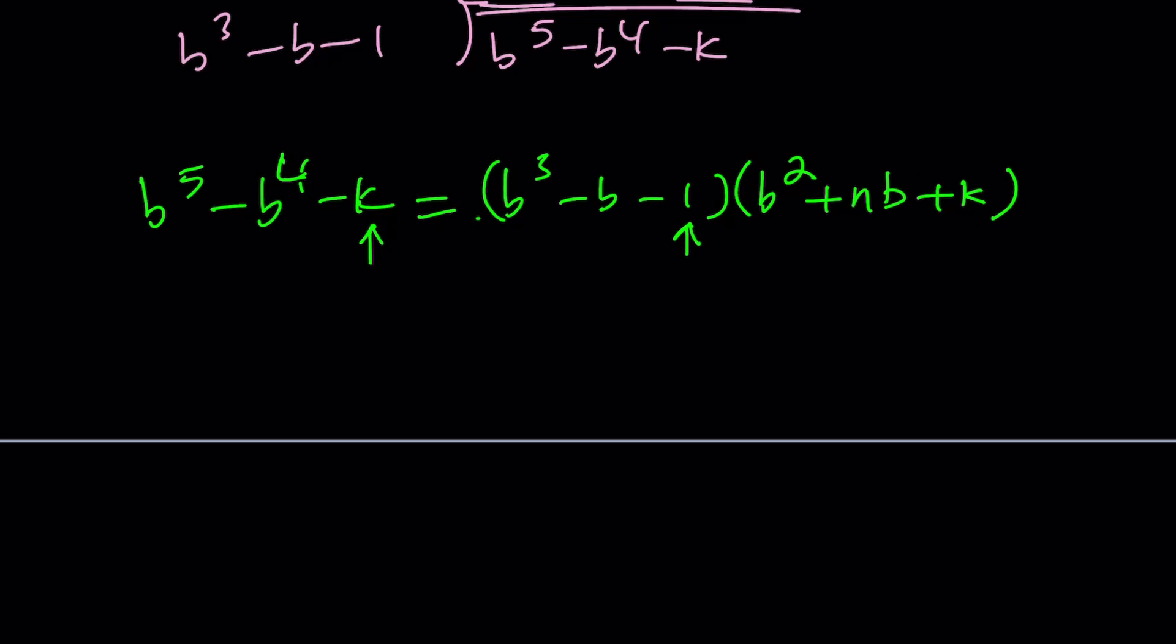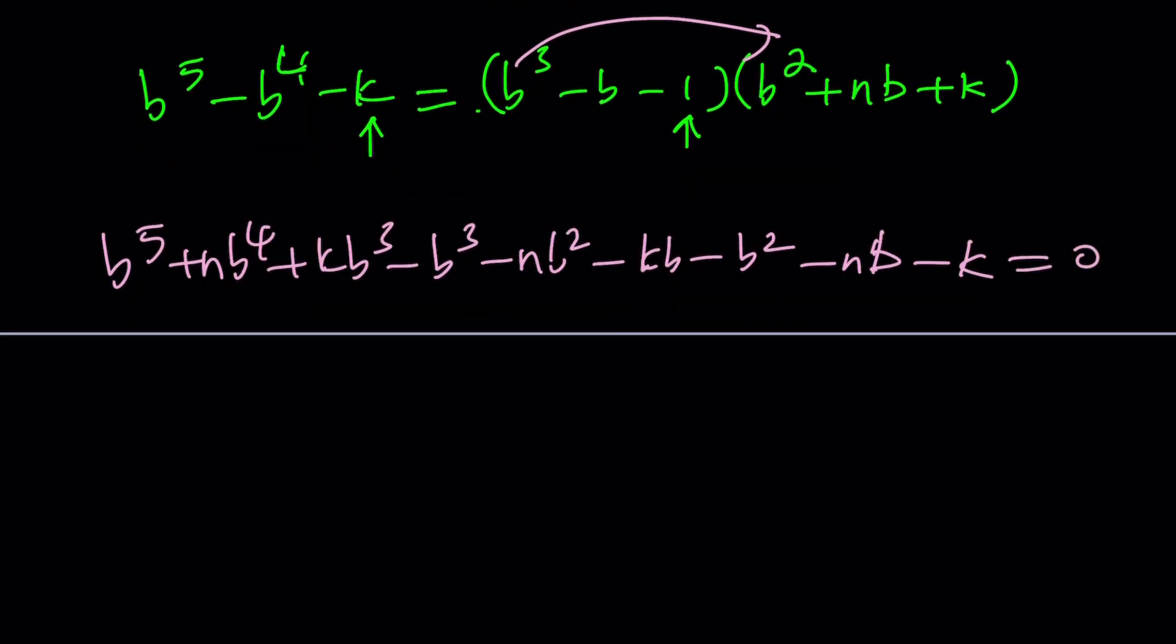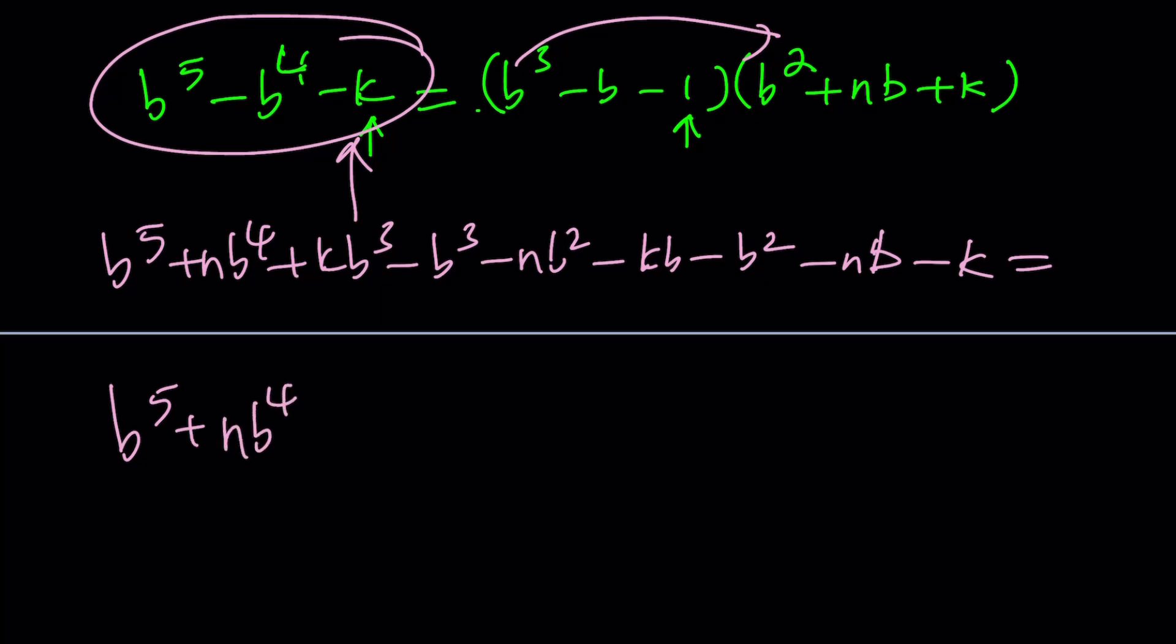Distribute with a little bit of distributive property. That gives you b to the fifth plus nb to the fourth plus kb cubed minus b cubed minus nb squared minus kb minus b squared. A lot of terms. Minus nb minus k. Okay, that's it. Let's simplify this. And this is equal to, not zero, it's equal to this. There you go. It's equal to that. Okay. We'll set it equal. Let's rearrange or collect like terms. b to the fifth plus nb to the fourth plus k minus 1 b cubed minus n plus 1 b squared minus the opposite of k plus n. I mean plus the opposite b minus k. Awesome.